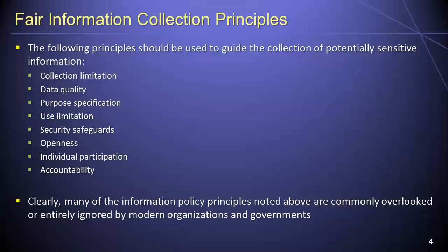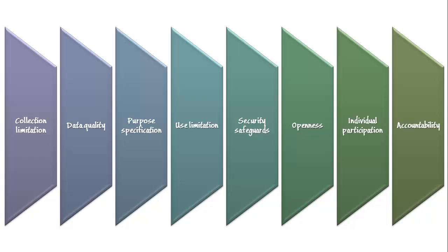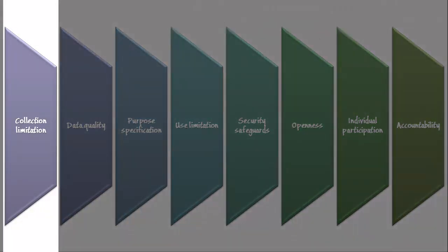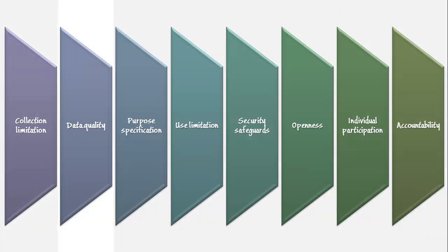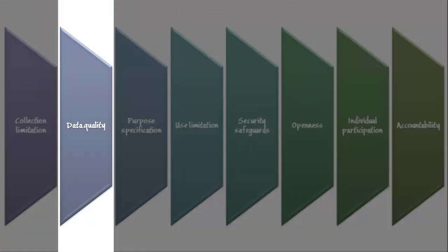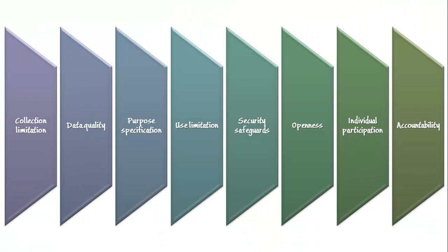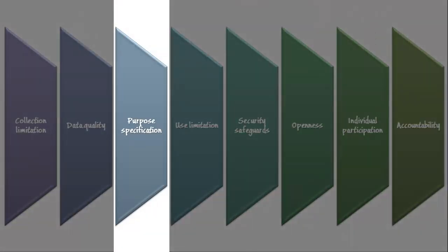As a means of constraining the abuse of individuals' private data, several principles should be used to guide the collection of potentially sensitive information. The first is the principle of limited collection — information should only be obtained in a fair and lawful manner. Second is the principle of data quality — information should be of high quality and relevant to the context for which it is being gathered. Third is the principle of purpose specification — the purpose for which information will be used should be clearly specified, and the information should be permanently destroyed after that purpose has been achieved.